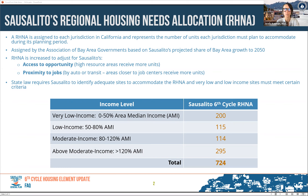To simplify: we are being required by the state to identify sites — called opportunity sites — and that's the process we're going through now. This is a state mandate placed upon Sausalito. The city does not have the authority or ability to reduce its RHNA. It's assigned this number and must abide by it.